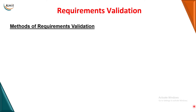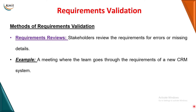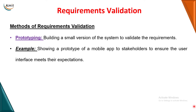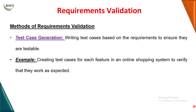How is requirements validation actually performed? You have various methods. The first method is requirements review, where you sit along with the stakeholders and look into the document to find out if there are any errors or missing details. The second method is prototyping, where instead of reviewing, you actually build a very small prototype or blueprint-type structure related to your software and check whether it is meeting the expectations of the customer.